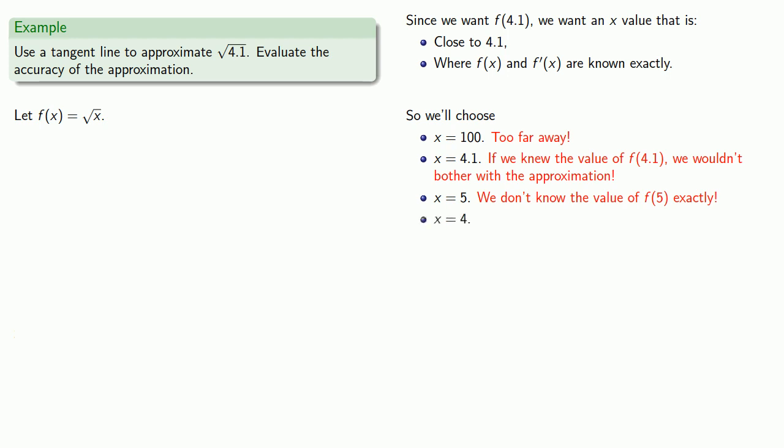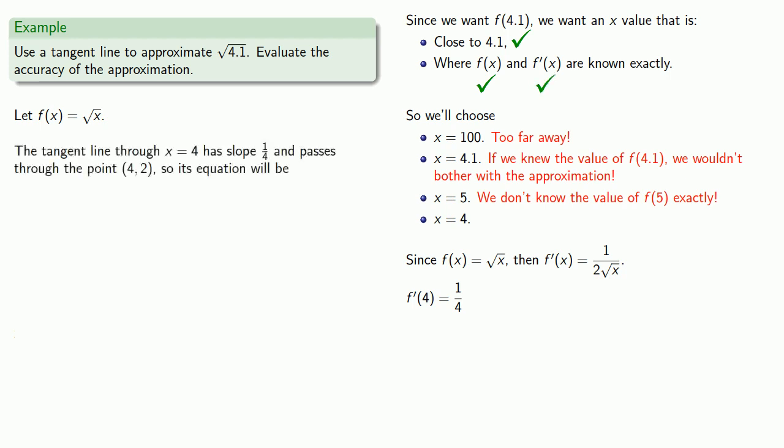How about 4? So 4 is close to 4.1. f of 4 is the square root of 4, which is 2, and so we know that exactly. And if we find f prime of x, we find it's equal to... and if x equals 4, this will be... which we know exactly. So we know the tangent line through x equals 4 has slope 1 fourth, and passes through the point (4, 2). So its equation is going to be...